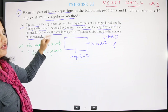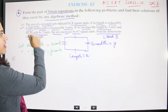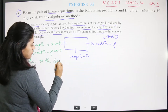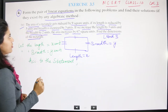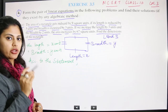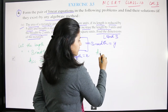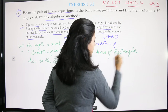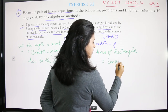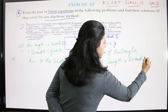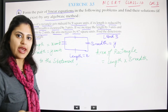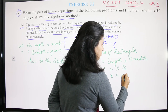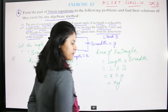Now let's write things according to the statement. An important point is that the area of a rectangle is given by length into breadth. So area of the rectangular garden equals length × breadth. Since length is x and breadth is y, area equals xy.